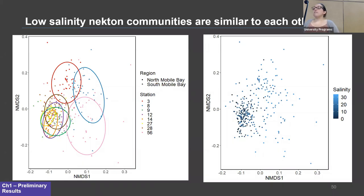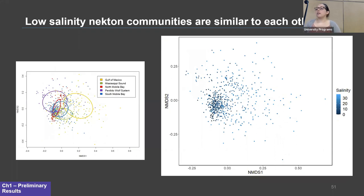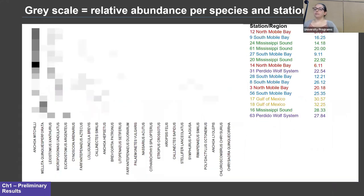These two plots are the exact same MDS but with colors coded differently. The plot on the left has colors representing stations; in the plot on the right, point color represents salinity — dark blue for lower salinity and light blue for higher salinity. You can see that all low salinity samples or stations are grouped together, while higher salinity stations radiate out to the right, indicating that low salinity necton communities are similar to each other. When we bring this back out to the larger MDS with all regions included, this trend still holds true.